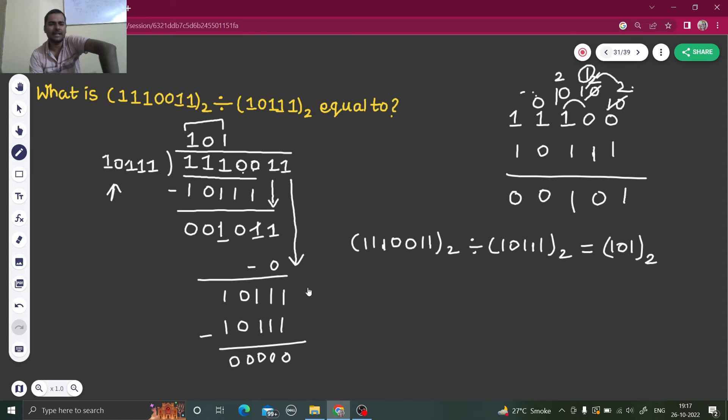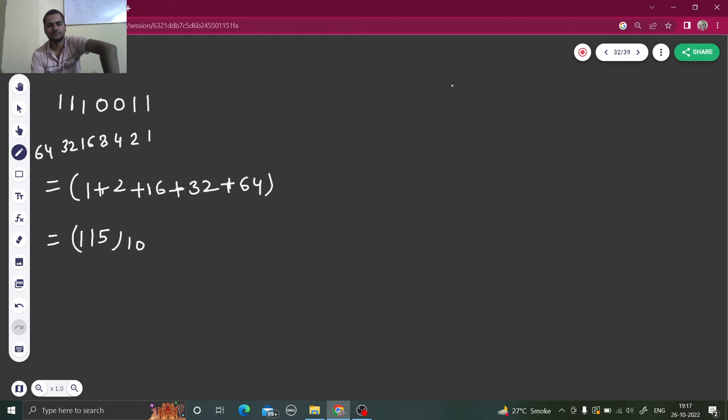Next one I have 10111, this I am multiplied by 1. So 1 into 1 is 1, 2 into 1 is 2, 4 into 1 is 4, and 16 into 1 is 16. So this is 20, 20 and 3 is 23.